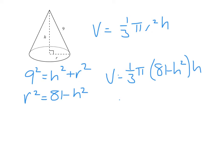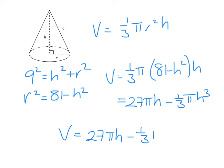So 1 third of 81 is 27, so we have 27 pi times h minus 1 third pi h squared times h is h cubed. So the volume is 27 pi h minus 1 third pi h cubed.